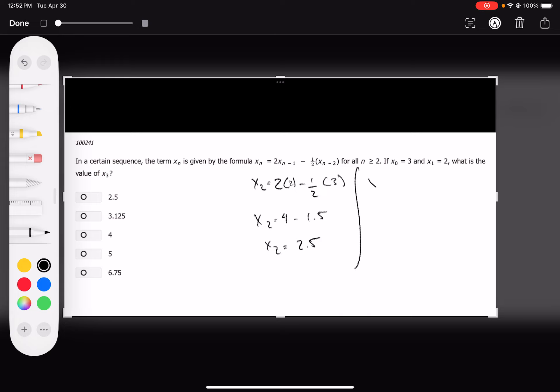And then now I want to know x of 3. So x of 3 is 2 times x of 2 minus 1 half times x of 1, just to be careful with it. So x of 2 we just got was 2.5. Plugging that in, minus 1 half, x of 1 we knew from the jump was 2.